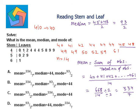The mode is the value most frequently occurring in the data set. We can see 44 is repeated three times, and no other value is repeated three times, so the mode is 44. So mean is 334/7, median is 93/2, and mode is 44.